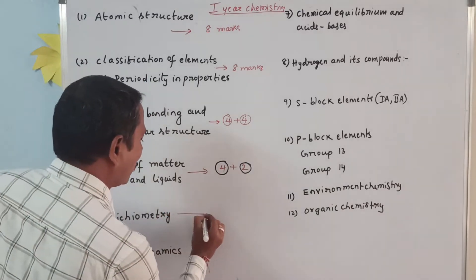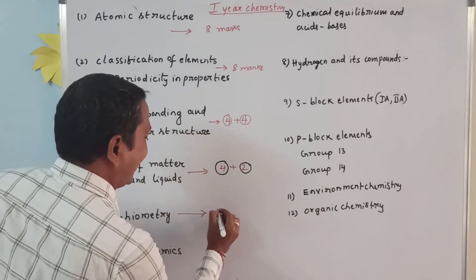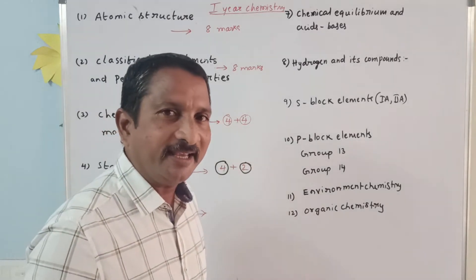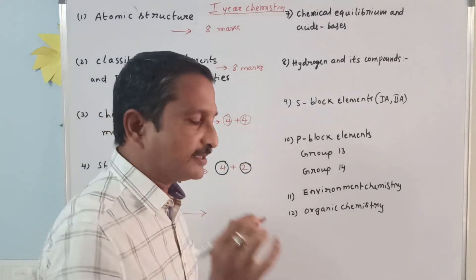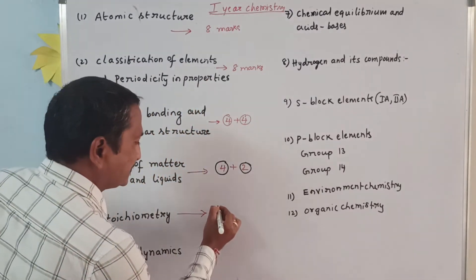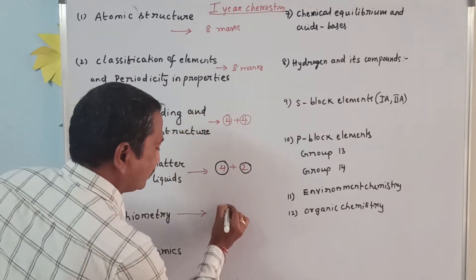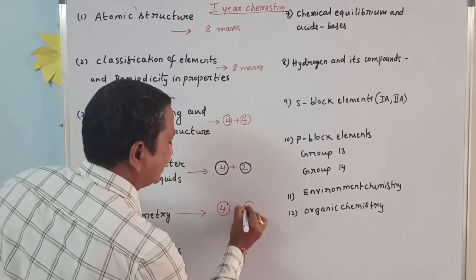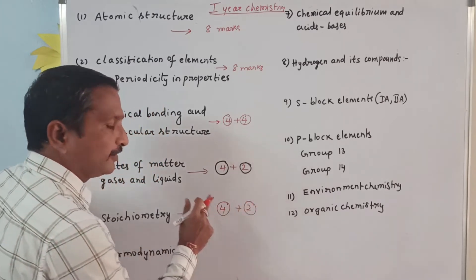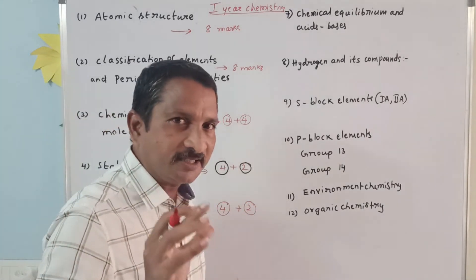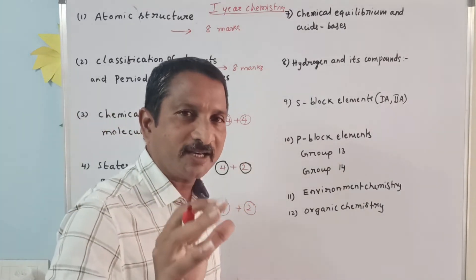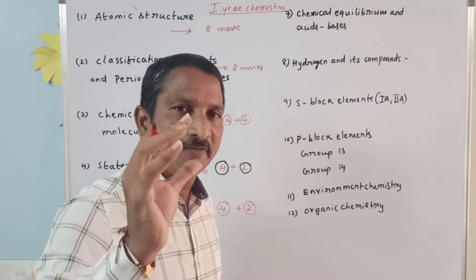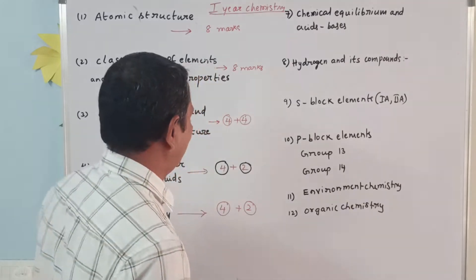Fifth unit: stoichiometry. The weightage of stoichiometry is six marks. Out of six, one is a four-mark question and another one is a two-mark question. The four-mark question is a short answer and the two-mark question is a very short answer.